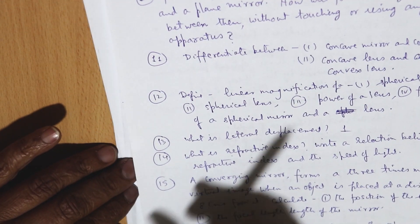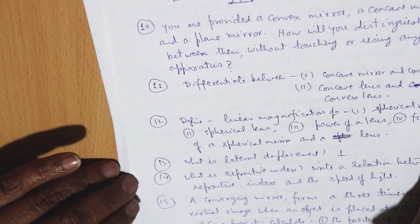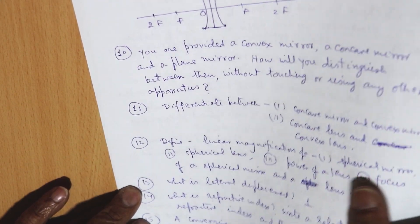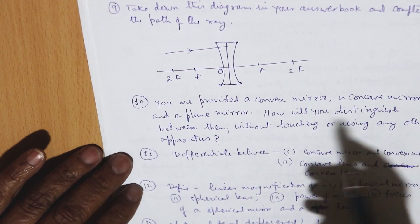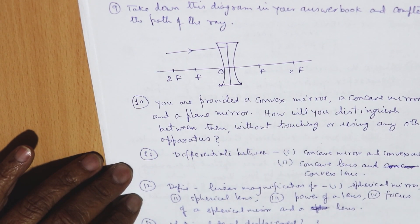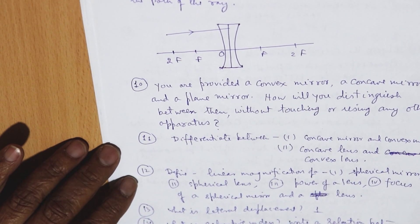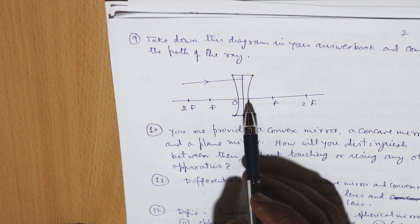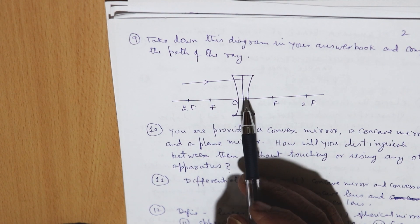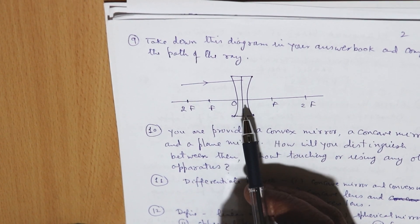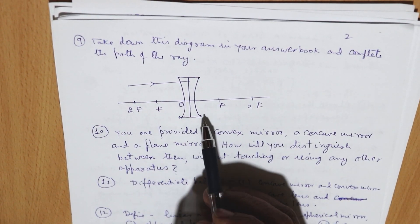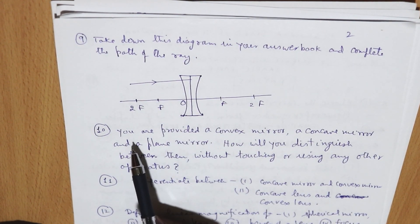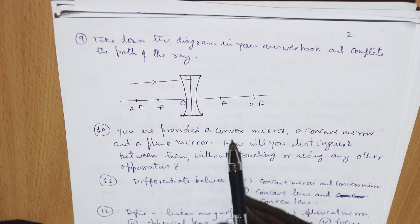Next part: draw the diagram in your answer book and complete the path of the ray. A concave lens is shown and you have to show where the image is using the ray diagram.